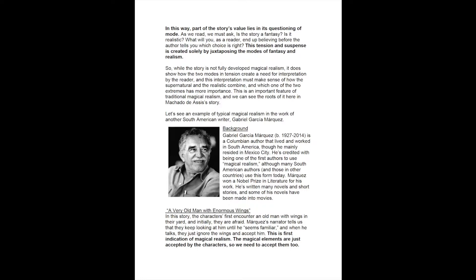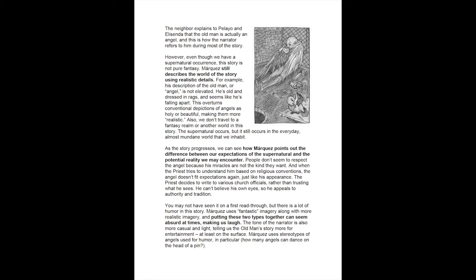In the story A Very Old Man with Enormous Wings, the characters first encounter an old man with wings in their yard, and initially they are afraid. Marquez's narrator tells us that they keep looking at him until he seems familiar, and when he talks, they just ignore the wings and accept him. This is the first indication of magical realism: the magical elements are just accepted by the characters, so we as readers need to accept them too.